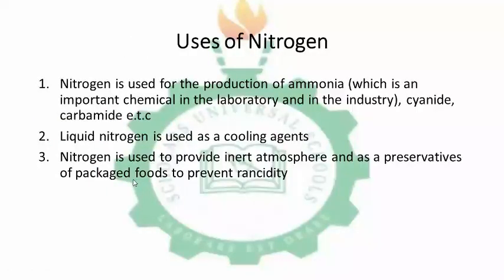Now, the uses of nitrogen. Nitrogen is used for the production of ammonia, which is an important chemical in the laboratory and industry. It is also used to produce cyanide and carbonate compounds. Nitrogen occurs in proteins, and is also used to prepare urea in the laboratory. Liquid nitrogen is used as a cooling agent. Nitrogen also provides an inert atmosphere, and due to its high bond energy and inertness, it is used as a preservative of packaged food to prevent rancidity.